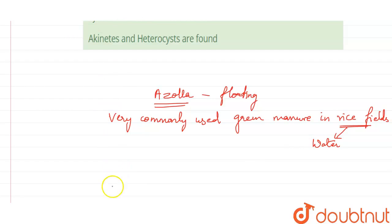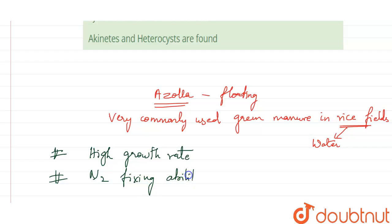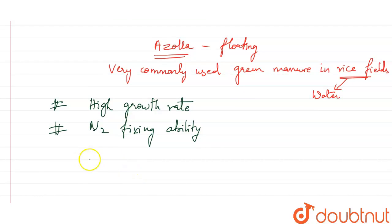Coming to why it is used — its properties: it can give out a high growth rate of the crop, so it could enhance the growth rate. It can also help in the nitrogen-fixing ability of the plant.